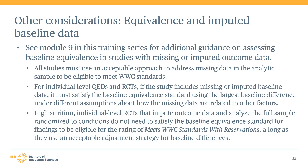Some study authors also may impute baseline data in their analyses. Imputing data means replacing the unobserved data in some way. The WWC has determined that only certain approaches are acceptable for imputing baseline data and the handbook describes these approaches. Module 9 in this training series provides additional detailed guidance on how to assess baseline equivalence in studies with missing or imputed outcome data. In short, all studies must use an acceptable approach to address missing data. If a study used an approach that the WWC does not consider acceptable, then the study findings will be rated does not meet standards.